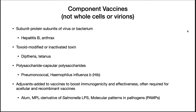This is how diphtheria and tetanus are treated. One disadvantage is the immunity is not lifelong, so you need constant boosters — that's why you get a diphtheria, tetanus, and pertussis booster every 10 years. There are also polysaccharide vaccines against capsular polysaccharides, such as a pneumococcal vaccine against Streptococcus pneumoniae and a Haemophilus B vaccine. Adjuvants like alum or MPL (monophosphorylipid A) are often added to vaccines to boost immunogenicity and effectiveness.